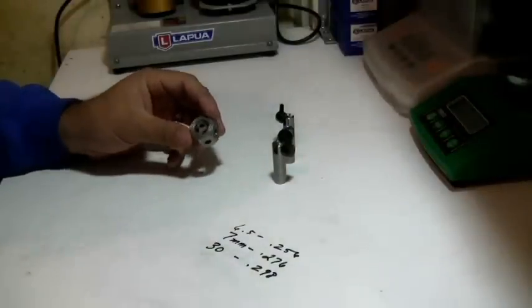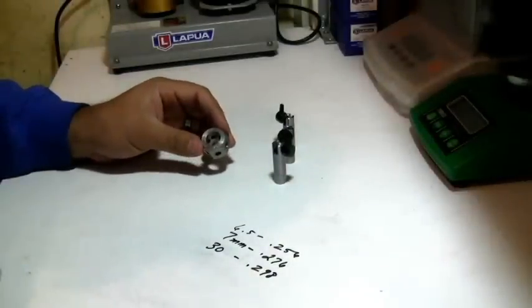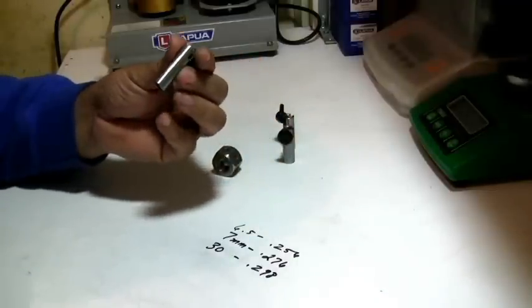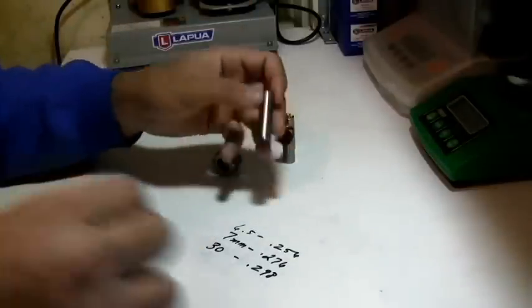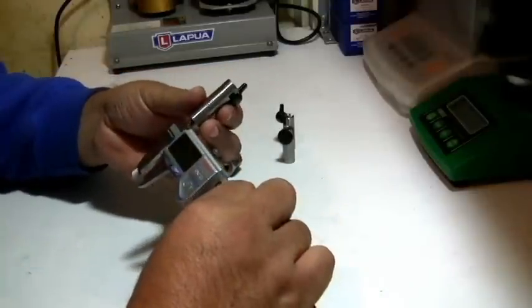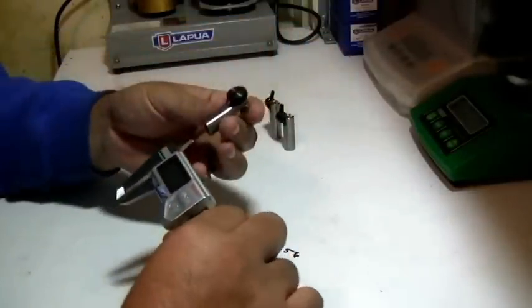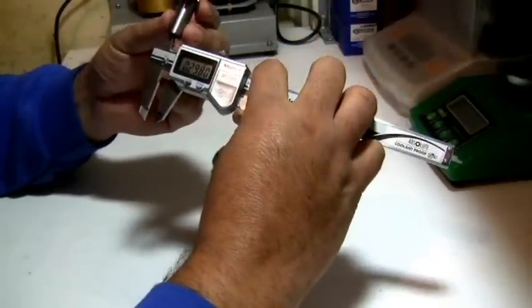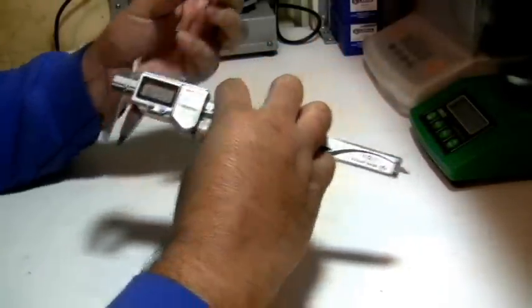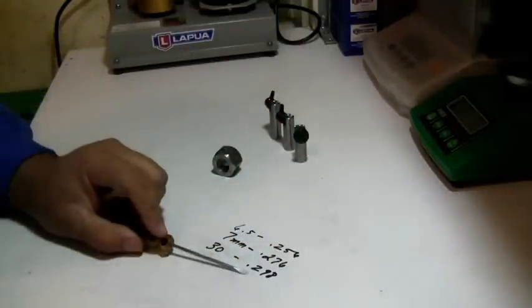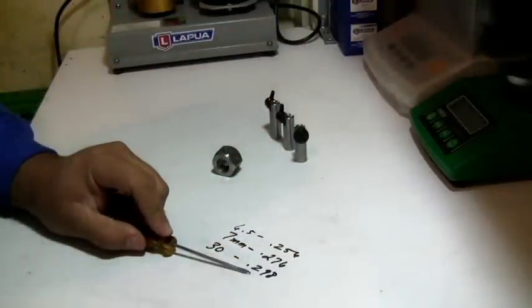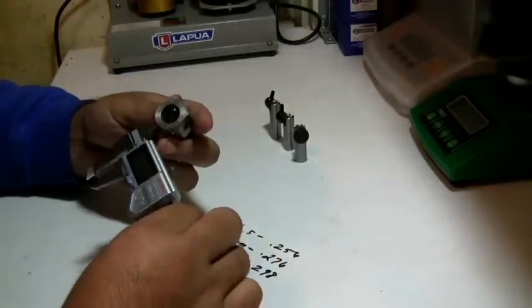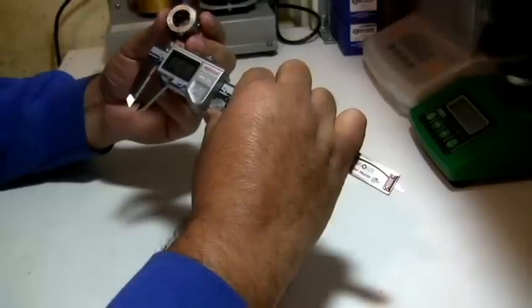It's not measuring at the point that we need to measure. This is the 30 caliber, this is the 7 millimeter. Again, 276. 30 caliber, 298. Again, it's dead nuts on what Brooks has for their barrels on the bore.